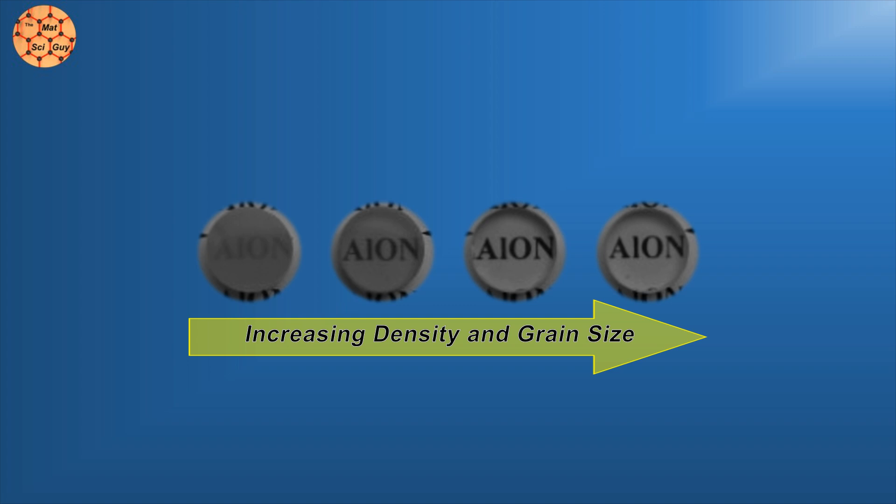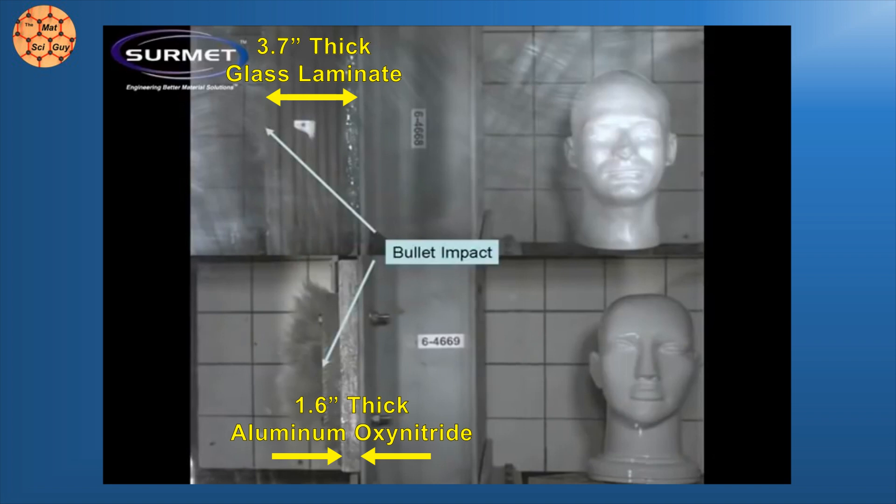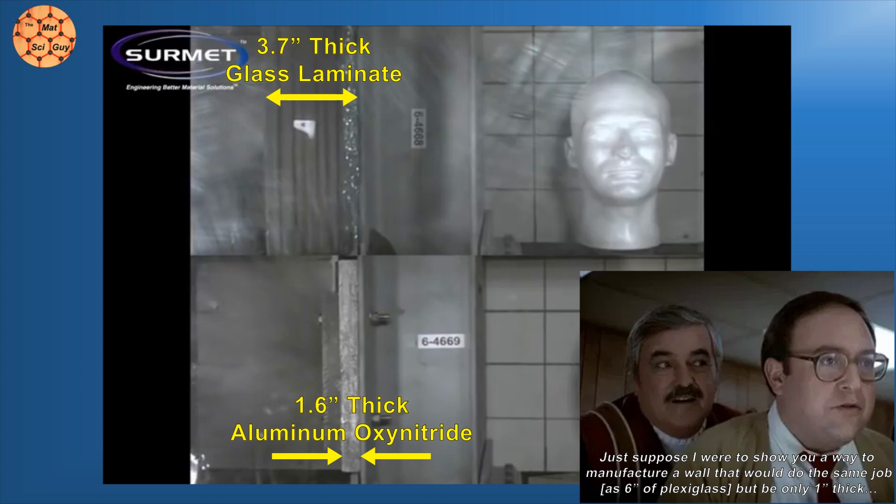It's even been proposed as one of the leading candidates for next-generation transparent armor. One somewhat well-known test showed it outperforming traditional bulletproof glass laminate, despite being less than half the thickness. Scotty's claims of transparent aluminum being many times stronger than plexiglass might not be all that outlandish.